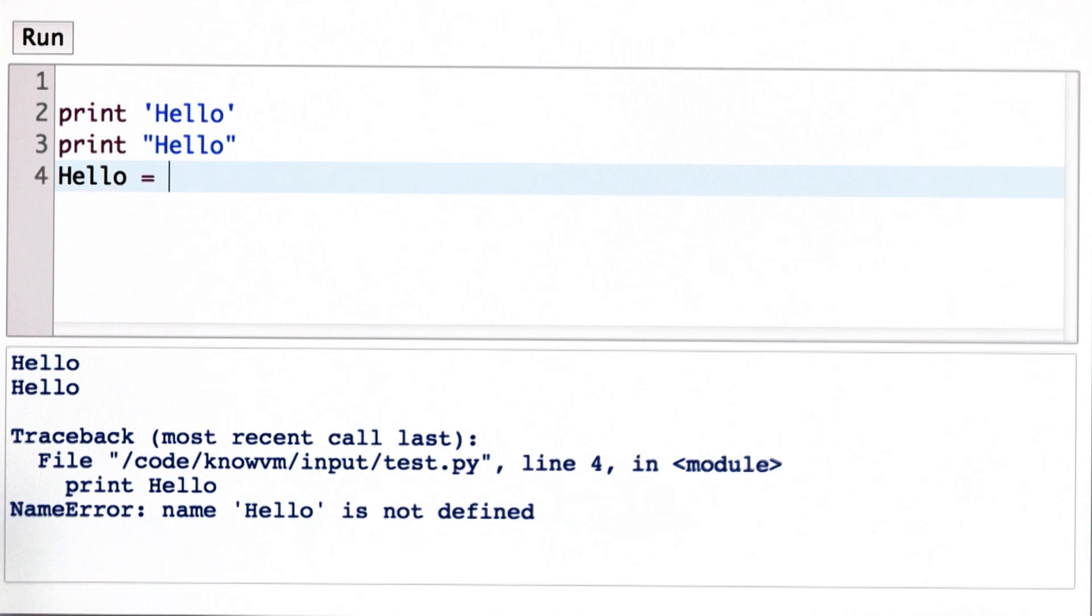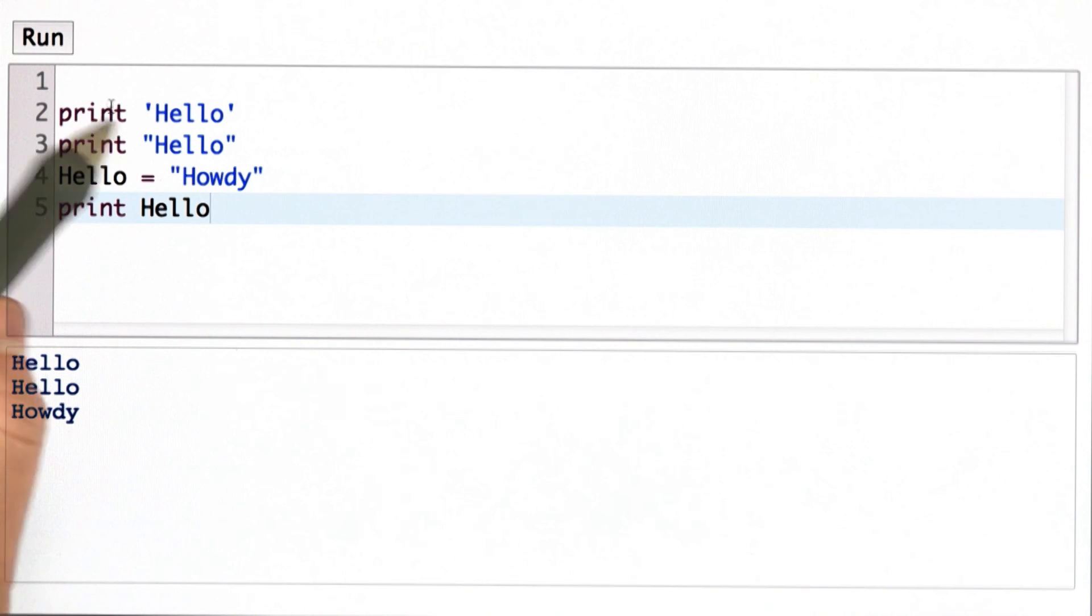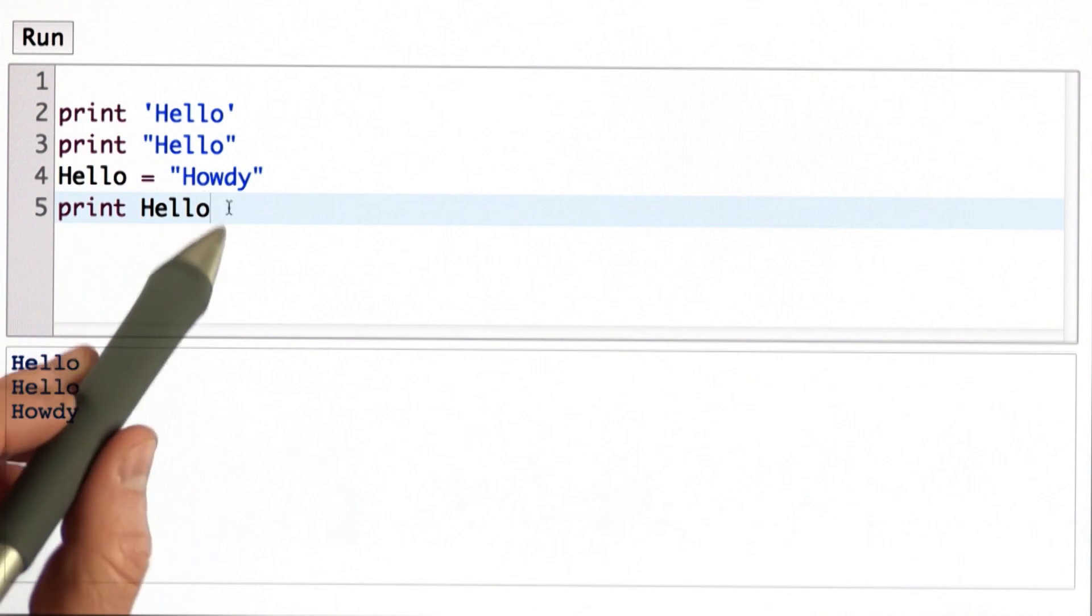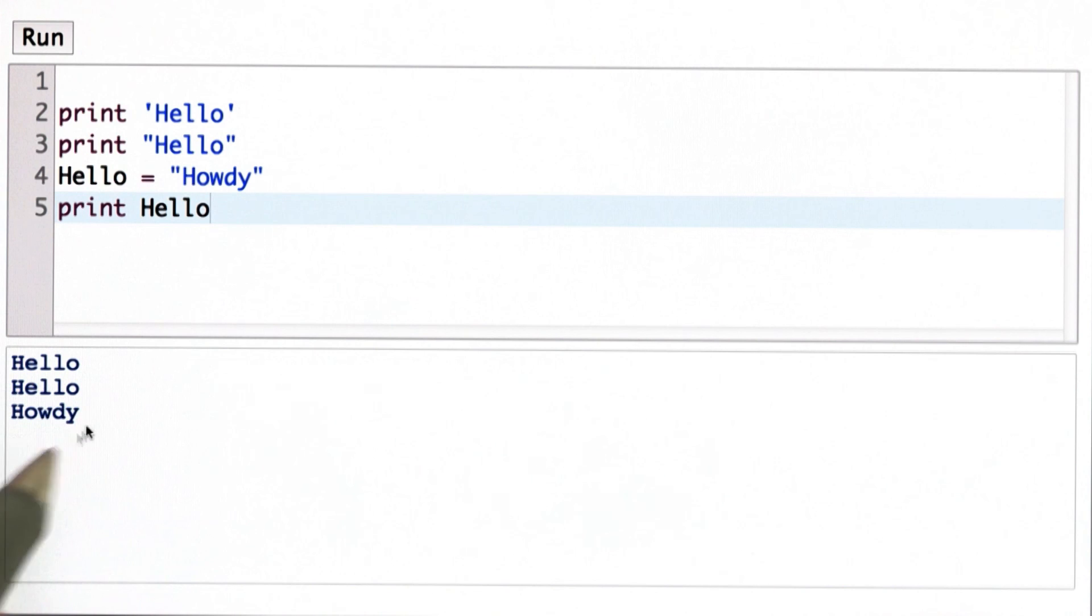If I wanted to, I could define a variable named hello. Let's make hello refer to the string howdy. And now when I print hello, it works. I see the first two prints that printed hello. Now when I print the variable hello, well, that refers to the string howdy. And I see howdy as the result.